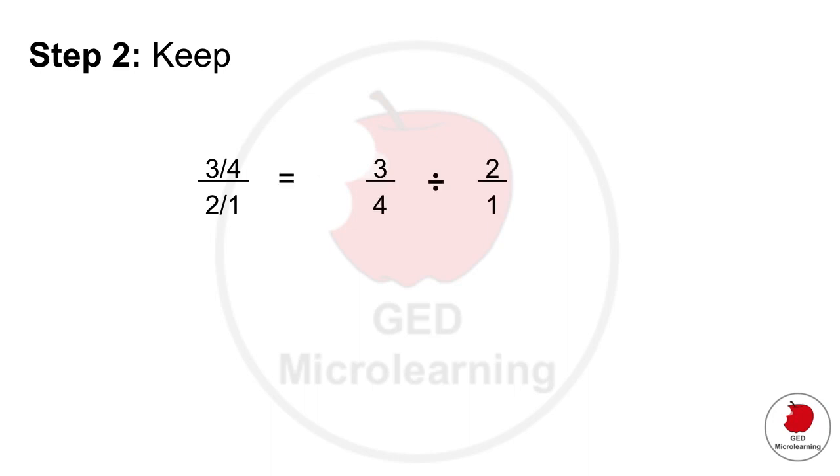So we have that first number that we said we're going to keep then we have the division sign that we're going to change to a multiplication sign and then finally we are going to flip the final formula from two divided by one to one over two.